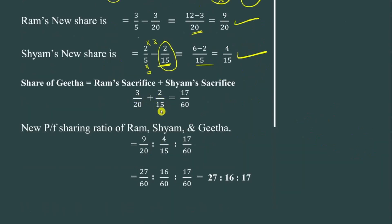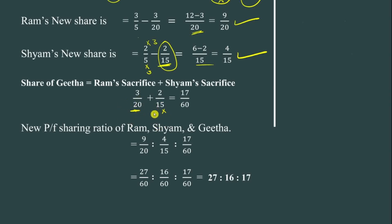To add 3/20 and 2/15, we find the LCM. The highest number is 20 and the lowest is 15. We need to find LCM of 20 and 15, which is 60.